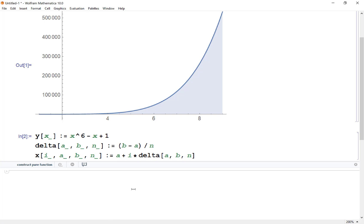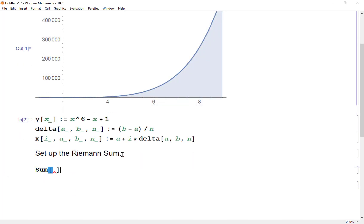So now that we have that, I believe we can set up our Riemann sum. We are going to use the sum function, which is basically the capital sigma. We said the sum of f of xi star. So in this case, it's going to be y of my xi star, which is going to be the x function. I know a, b, so that's going to be 1 to 9, n, times my delta. And here I want my i to go from 1 to n. And this will give me my Riemann sum.